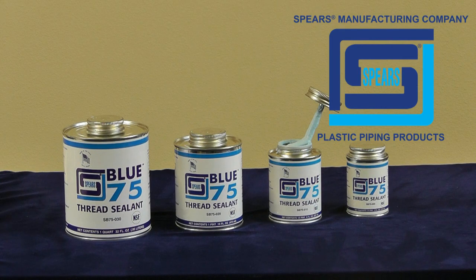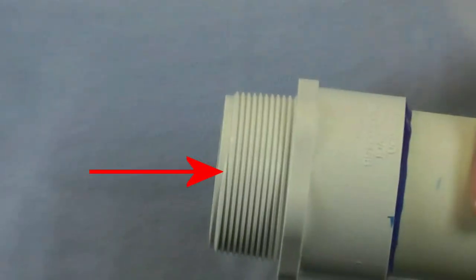Before applying paste, find the starting thread of the male component. Make sure to always cover the starting thread as well as the rest of the male threads using an even coat of thread paste.